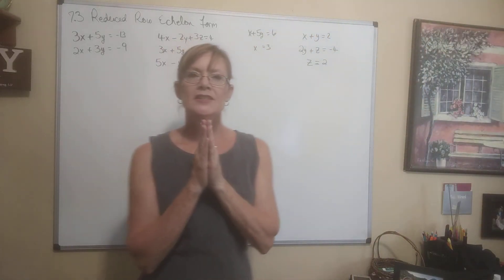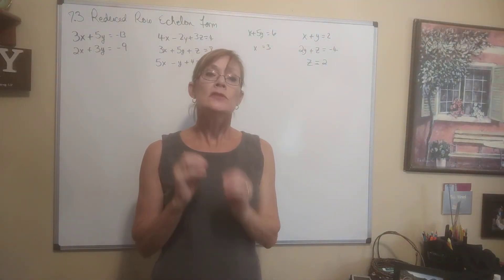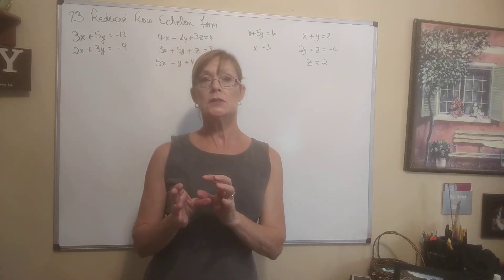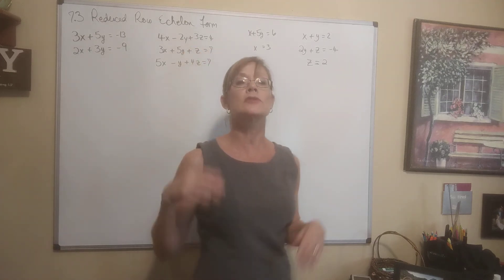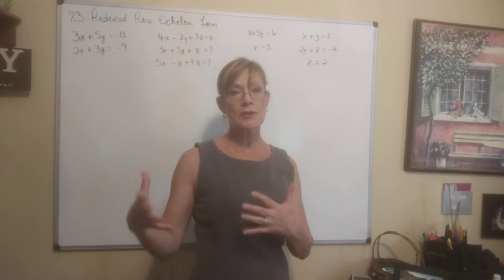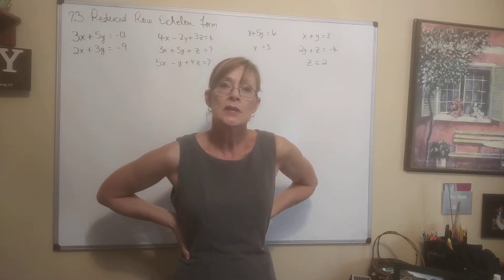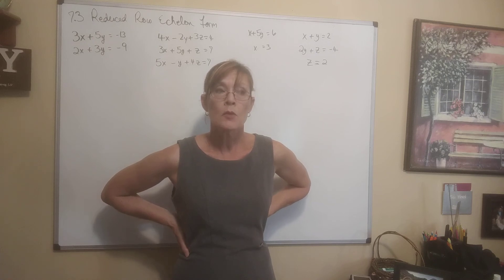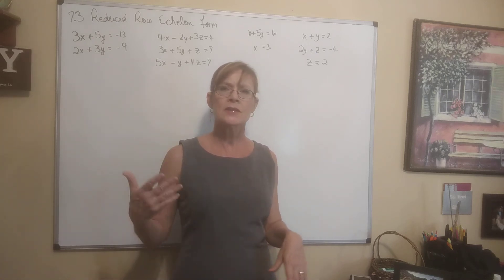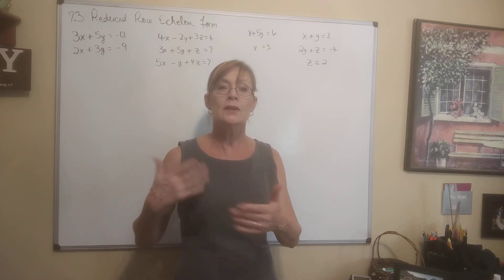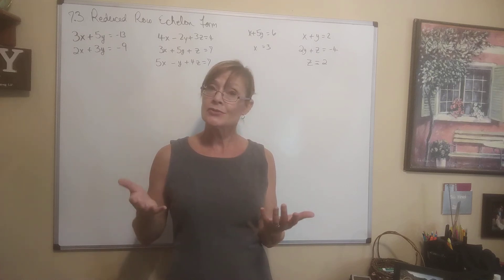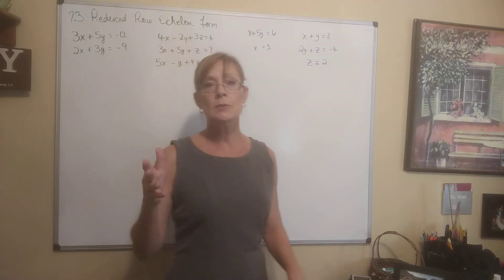Alright, we are about to start learning how to solve systems of equations using matrices. There are three different methods using matrices we're going to be using. The first is row echelon form or reduced row echelon form. The method is really called Gaussian elimination or Gaussian Jordan elimination. I'm going to demonstrate how to do it. Before we can actually do the method though, we have to get used to writing some things.